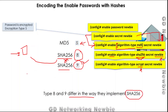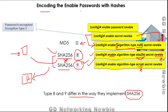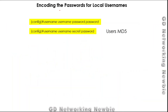The difference between Type 8 and Type 9 lies in how the SHA-256 algorithm is implemented in the hash calculation. Going from Type 5 to Type 8 to Type 9, the encryption becomes progressively stronger, with Type 9 (SCRYPT) being the strongest of these three methods.